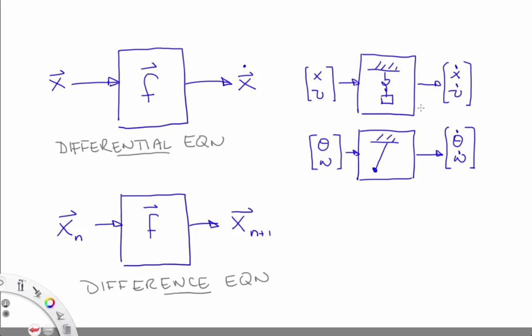A differential equation, like the logistic map, is a box of mathematics that tells you, for every point in the state space, what the next state will be. For a differential equation, which gives you just the direction in which the state is going to evolve, you have to do some work to get the next point.